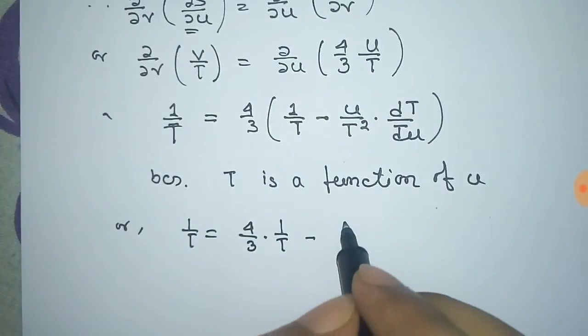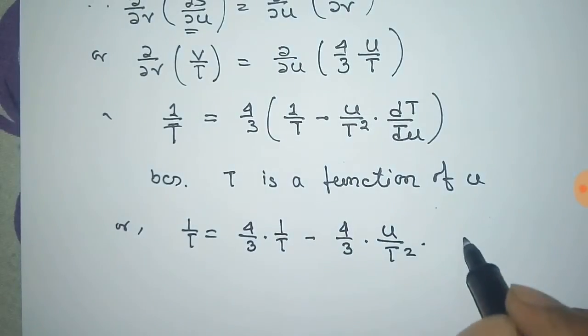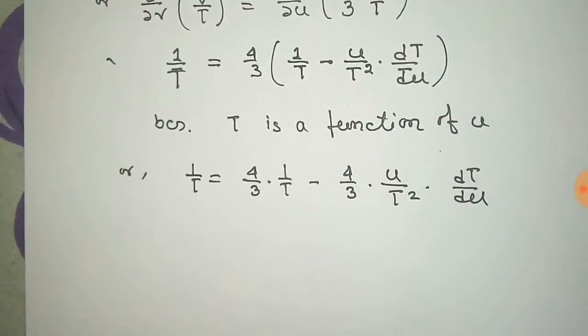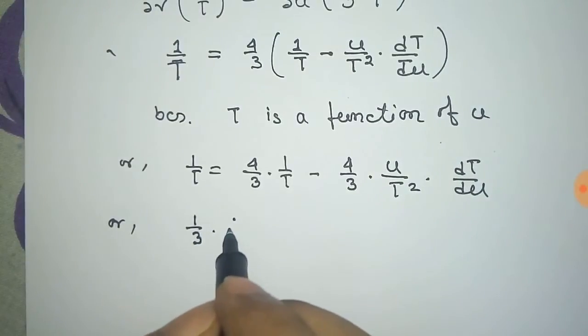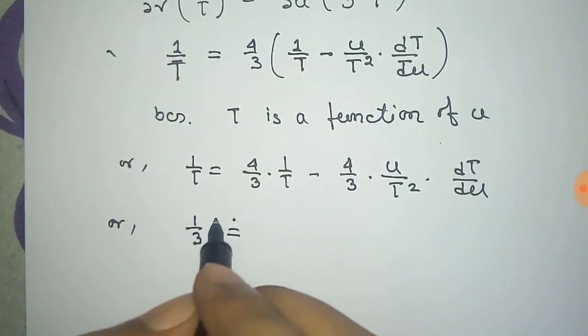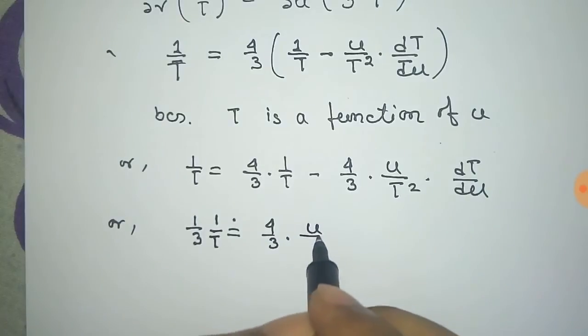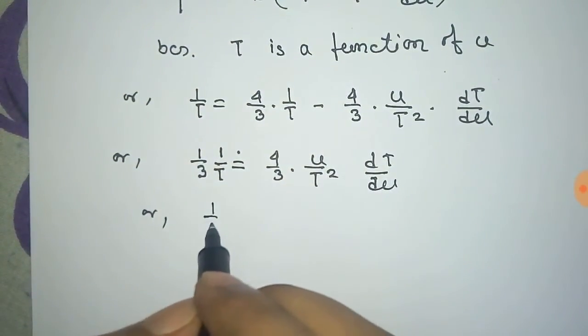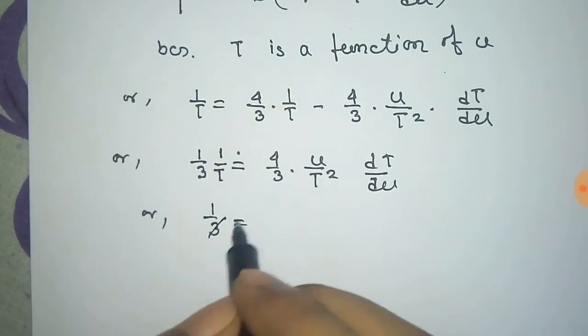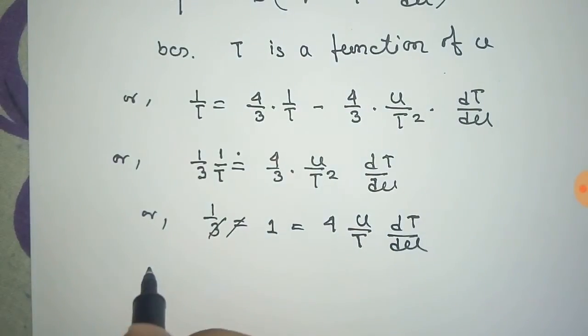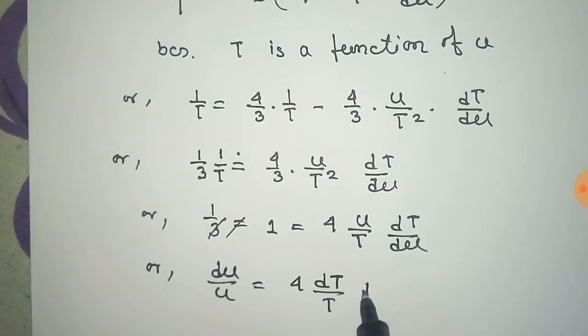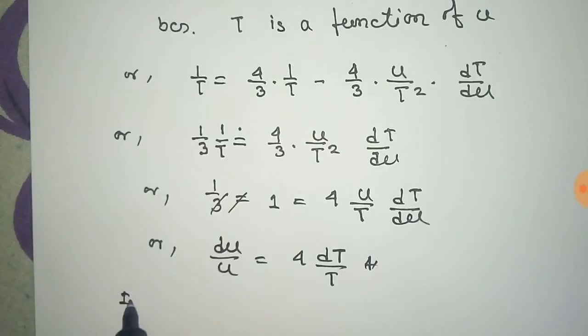Now we simplify this. 1/3 · 1/T = 4/3 u/T² dT/du. Through simple calculation, 1/3 = 4/3 u/T dT/du, or 1 = 4 u/T dT/du. We can write du/u = 4 dT/T, and now we integrate over this.